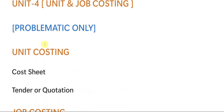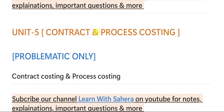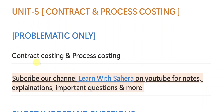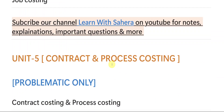Unit number five is Contract Costing and Process Costing — no theory again, only problems. The problems are really very easy once you understand the concept, and I will be uploading explanation videos for these too. My suggestion is to leave contract costing and go with process costing, as I personally find process costing easier. However, some people find contract costing easier, so go with whichever suits you. These were the long important questions from cost accounting.